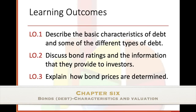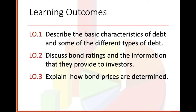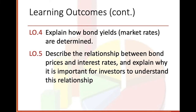Learning outcomes for this chapter. Number one, describe the basic characteristics of debt and some of the different types of debt. Two, discuss bond ratings and the information they provide to investors. Three, explain how bond prices are determined. Four, explain how bond yields — market rates — are determined. Five, describe the relationship between bond prices and interest rates and explain why it is important for investors to understand this relationship. So these are our objectives for this chapter.